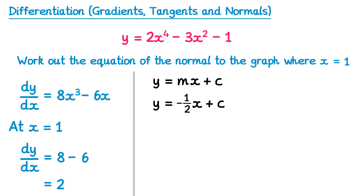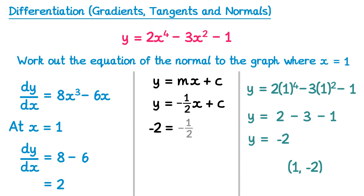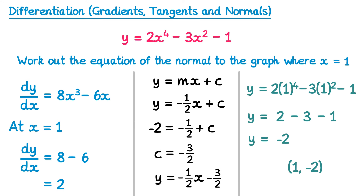We need a coordinate on the normal. Substituting x equals 1 into the original equation: y equals 2 times 1 to the power 4, minus 3 times 1 squared, minus 1, which gives 2 minus 3 minus 1 equals negative 2. So the point is (1, negative 2). Substituting into y equals negative one half x plus c: negative 2 equals negative one half times 1 plus c, giving c equals negative three halves. So the equation of the normal is y equals negative one half x minus three halves.